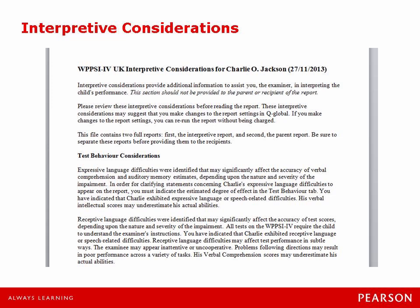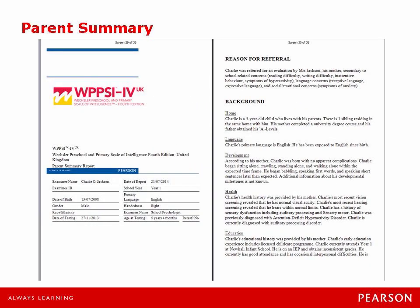So that information is going to help you with the interpretation. You're able to make changes that could also suggest changes that you make in the report settings on QGlobal. Now if you do have to make those changes you can actually come back to this screen after you have run the report and make the report setting changes and then rerun the report without being charged — so that's an important note to make here. The second option, the parent summary, is a summary — it's not a report. It's really only supposed to be used when a summary and not a full report is appropriate. It's just a few pages, breaks down the performance in easy-to-understand terms, and you can print it out or give it to the parents if you feel it's necessary. But it should not be used in lieu of the full report when necessary.